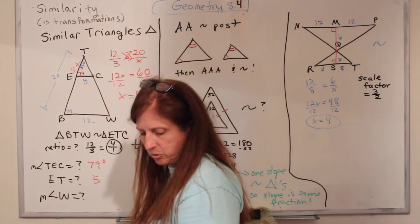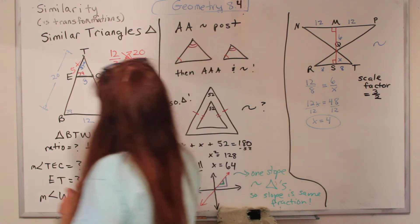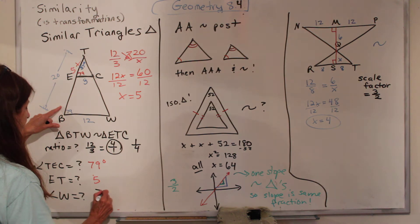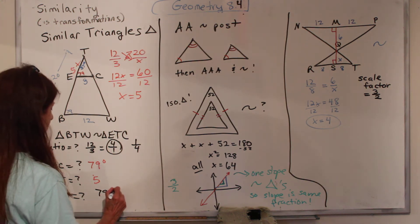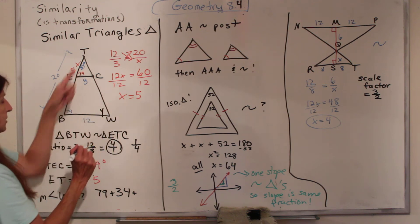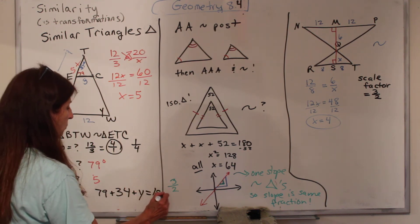Okay, and let's see, our next question down here. What is the measure of angle W? How can we figure that out? Well, we know this angle is 79, we know that one is 34. Our unknown, we'll call it Y, since we already used X.